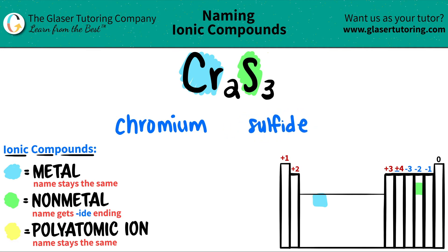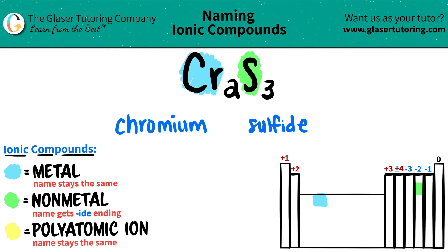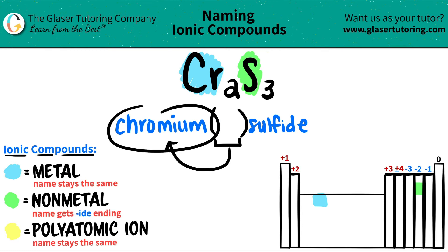Now I just need to make sure, since this is ionic, do I need a Roman numeral or not? Since chromium is in the transitional metals — and those transitional metals have exceptions, but chromium is not one of them — you need a Roman numeral, and the Roman numeral is always the charge of the metal.